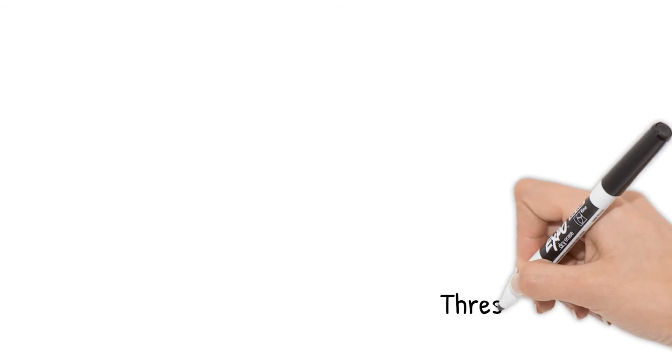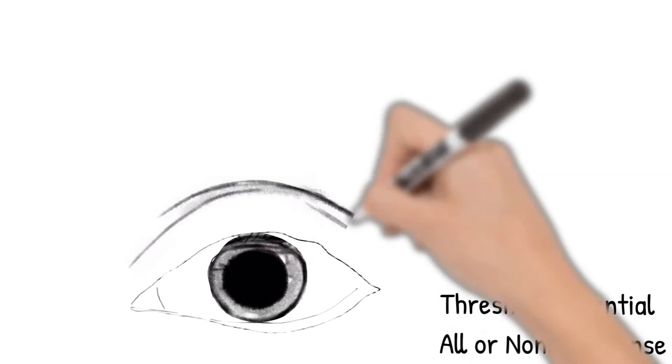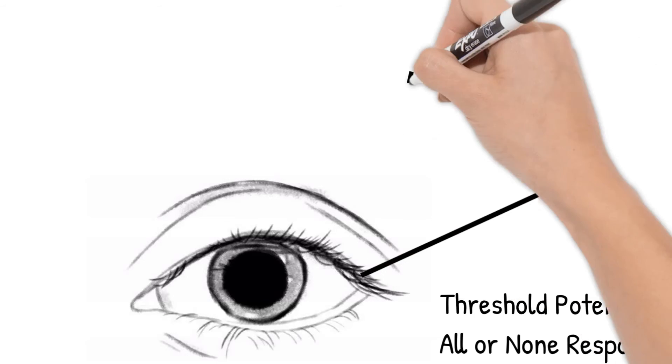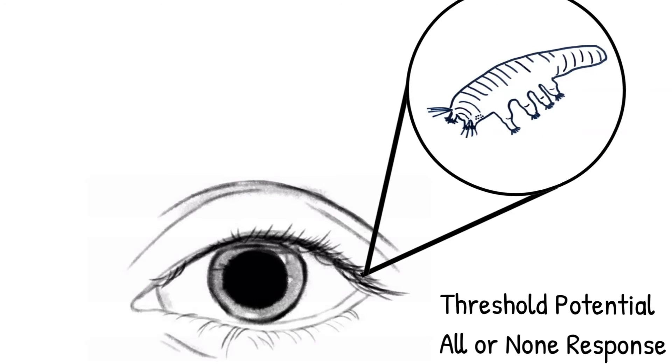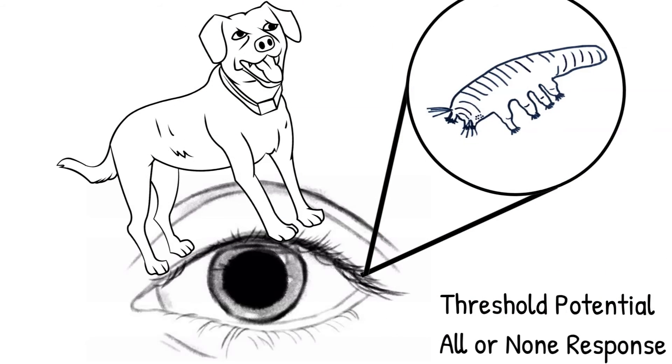I'll share a quick example of this threshold. There are millions of organisms living on us. A particularly disturbing one is demodex, which are tiny mites that can live in your eyelashes, yet we don't feel them. Their touch is too soft to reach threshold and create an action potential to tell your brain there's something there. But if there was a dog on your eyelash, you would definitely feel it.